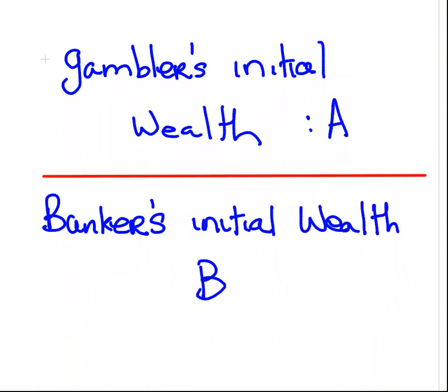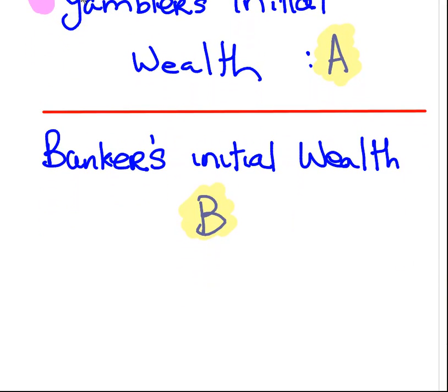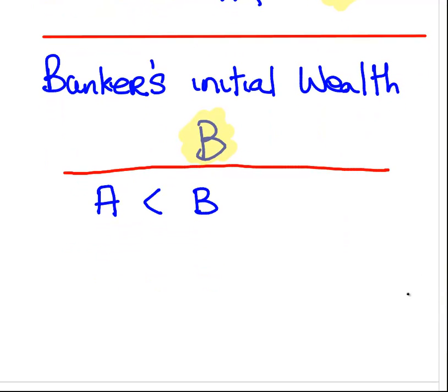Another thing to consider is the gambler's wealth and the banker's wealth when they start out. Before they begin their first round of gambling, the gambler will have a wealth of A and typically the banker will have a wealth of B at the start. It's usually posed in the way that A is less than B. It's not absolutely necessary, but it's to say that the banker can withstand more losses.